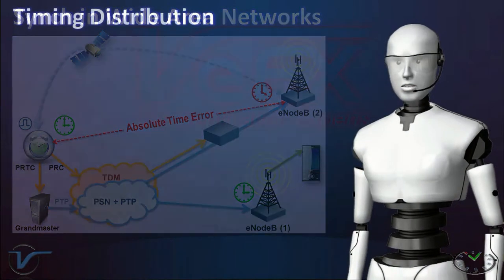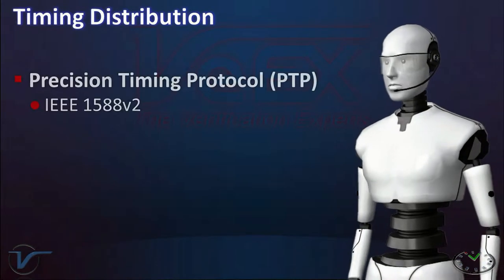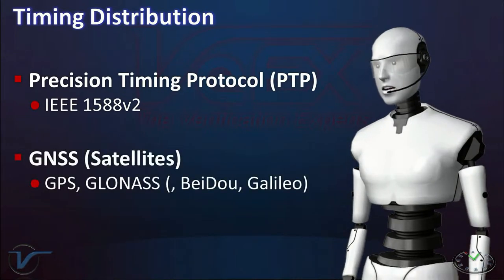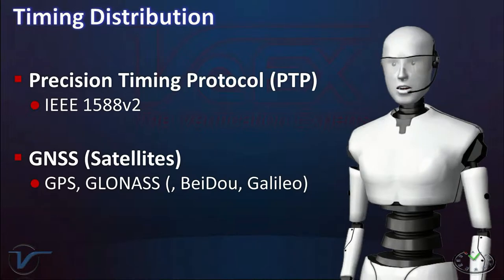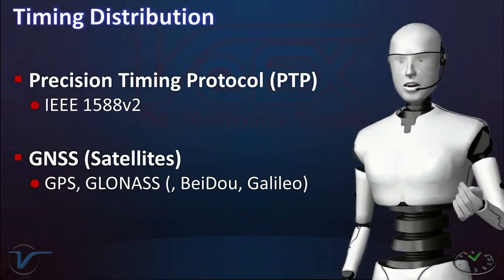There are different ways to assure that all nodes know the exact time. For example, Precision Timing Protocol, or PTP, and Global Navigation Satellite Systems, or GNSS, like GPS, are often used to acquire precise time.